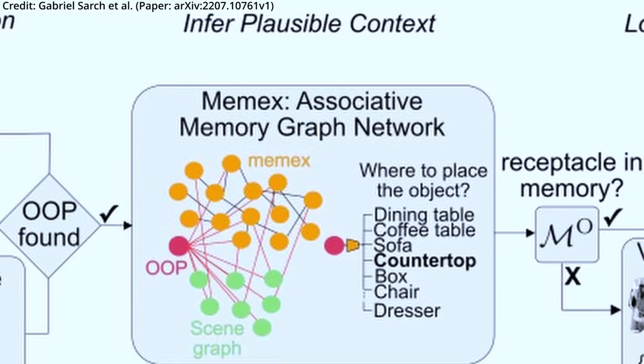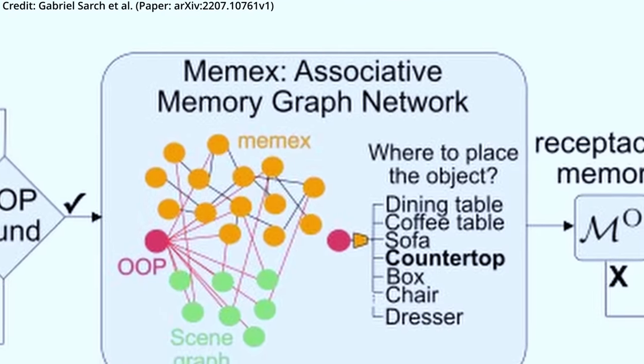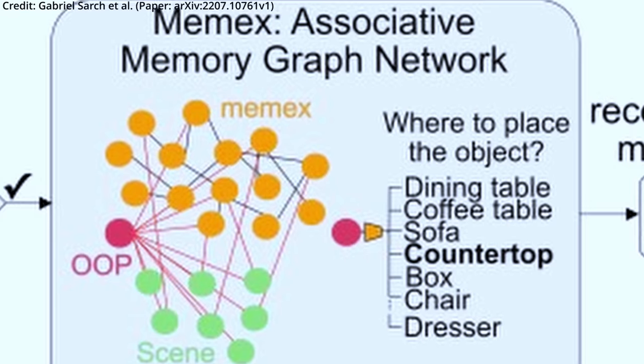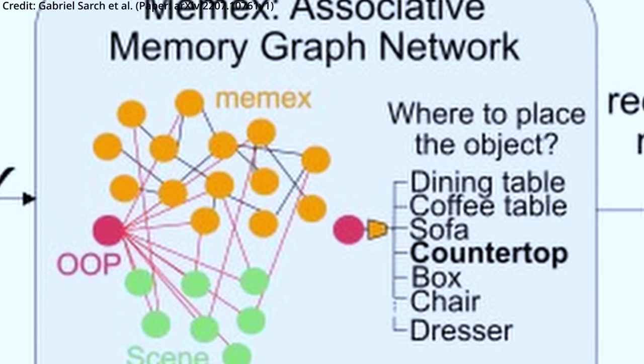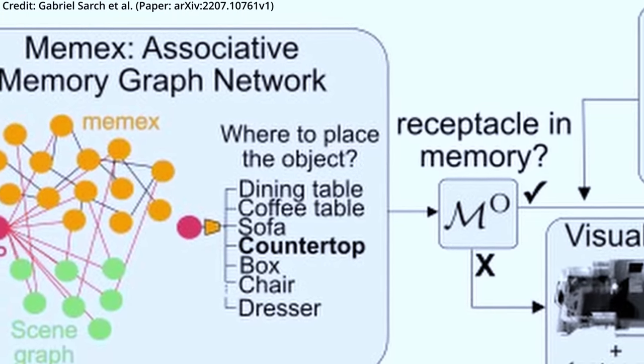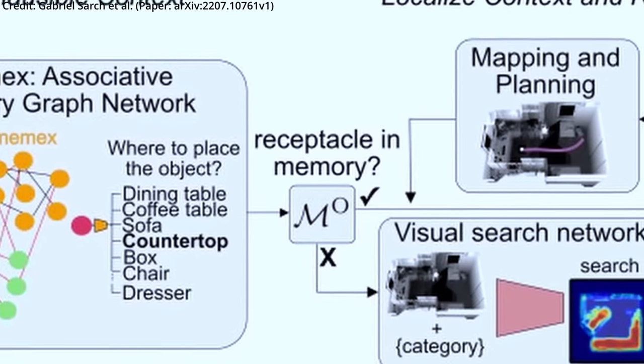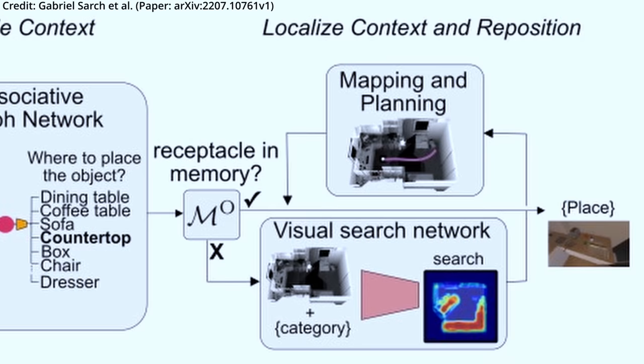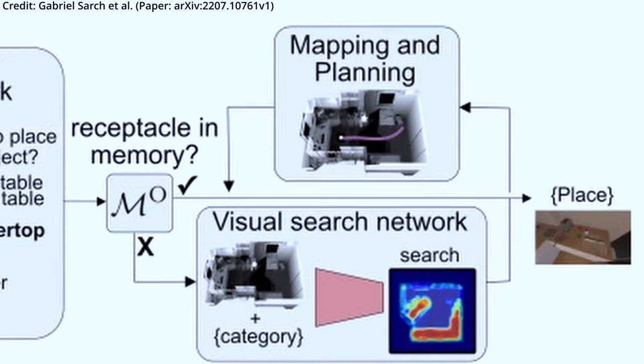In the second step, the model infers a probable receptacle for the item, using the scene graph and joint external graph memory. If the container isn't immediately recognized, Tidy's visual search network guides its exploration, suggesting where the container might be found. Lastly, the model keeps track of the estimated 3D centroids of previously identified objects, utilizing this information for navigation and object tracking.